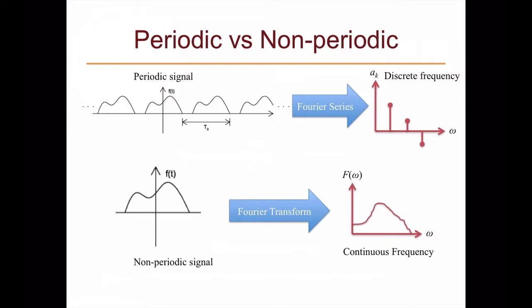In the last lecture we learned about the Fourier series, which can be used to represent periodic signals in the frequency domain. In the Fourier series you can transform signals from the time domain as a continuous and periodic signal into a discrete frequency signal representing frequency components and their harmonics. In this lecture we will focus on non-periodic signals, and the technique that can analyze the frequency components of non-periodic signals, known as the Fourier transform, which transforms from the time domain to the continuous frequency domain.